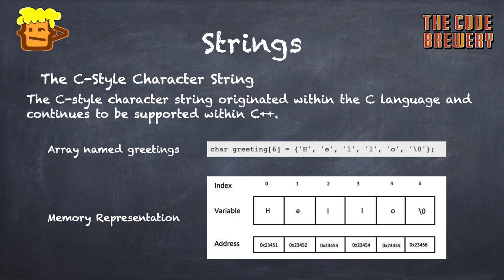We can see how the memory representation happens in the C-style character string. If you think about the null character, actually you do not place the null character at the end of the string constraint. The C++ compiler automatically places the \0 or the null character at the end of the string when it initializes the array.